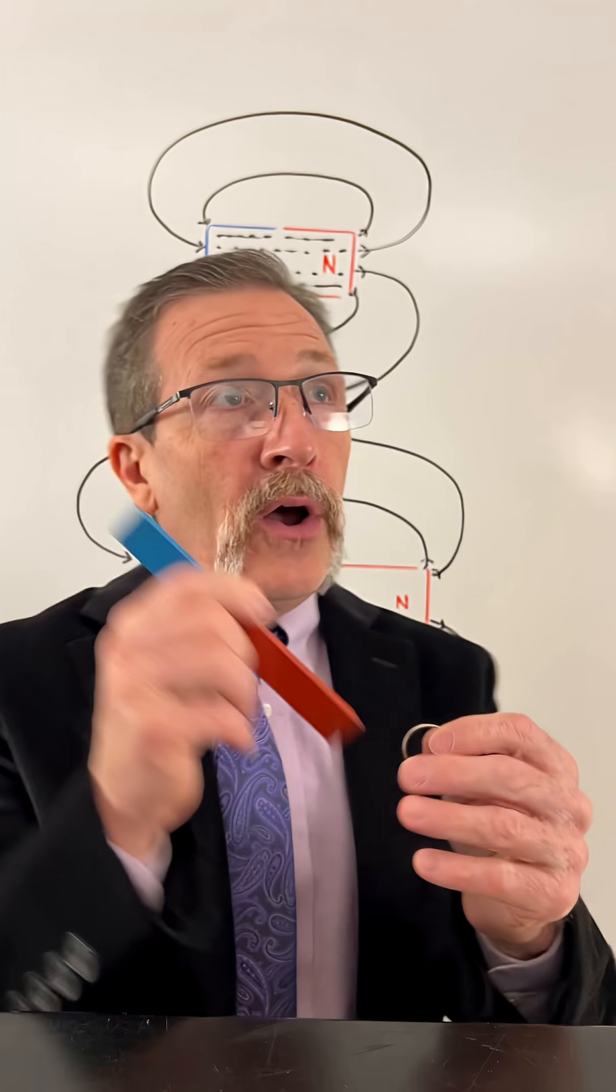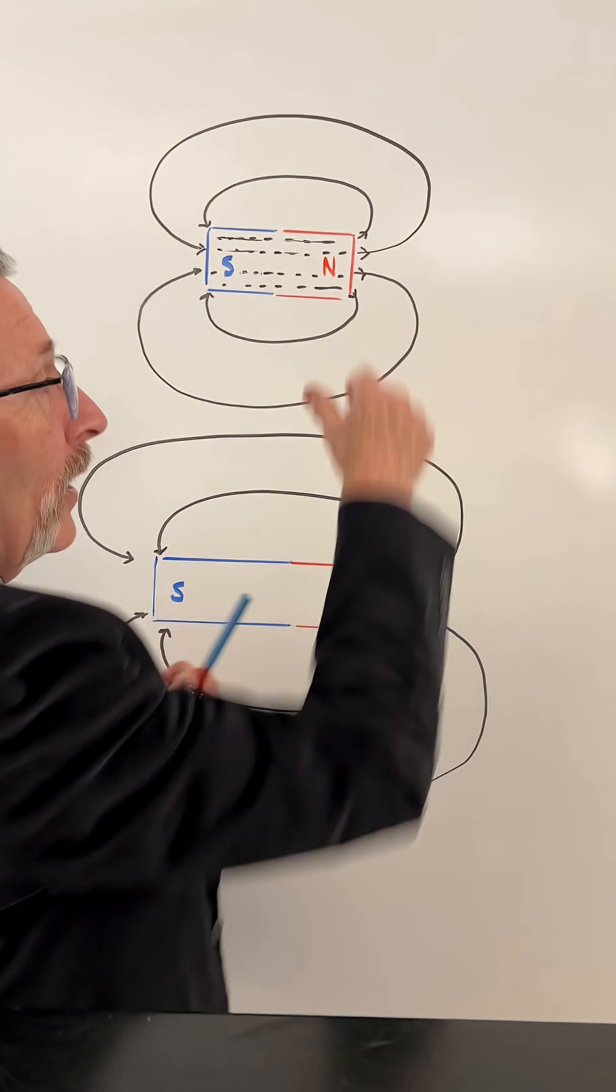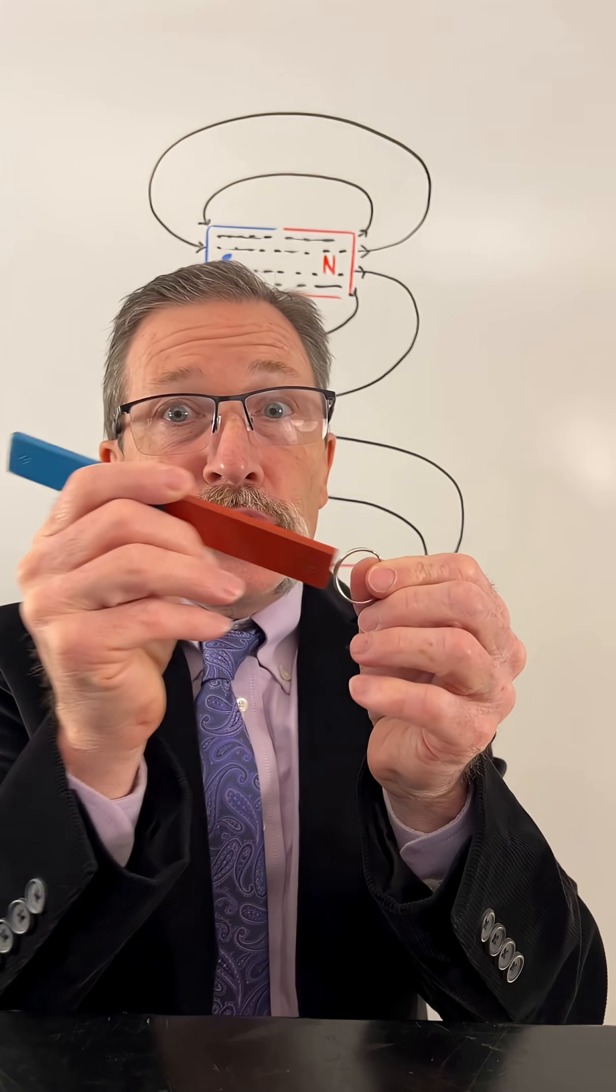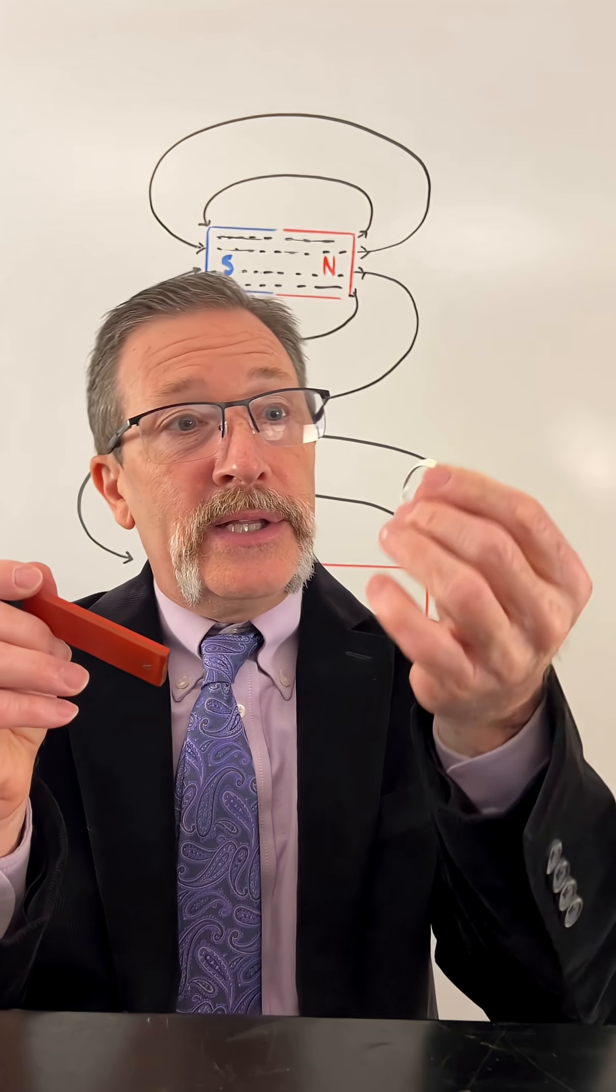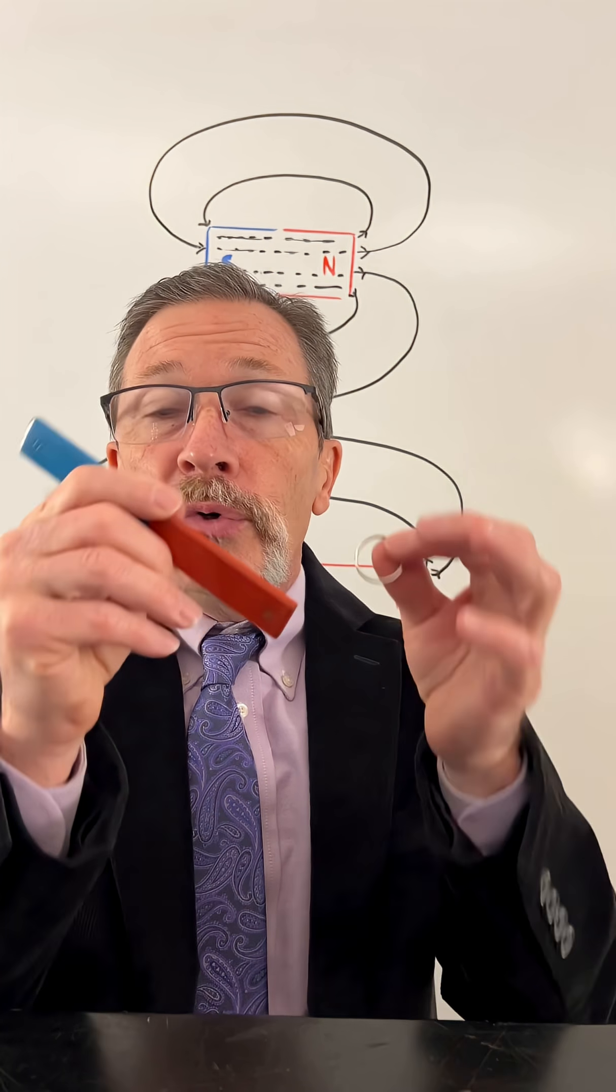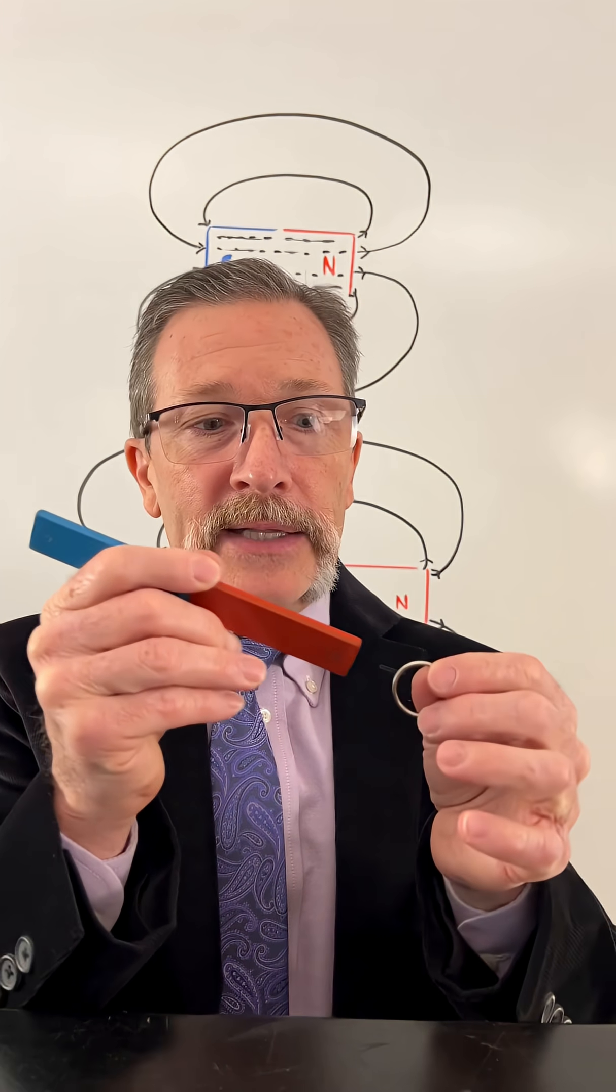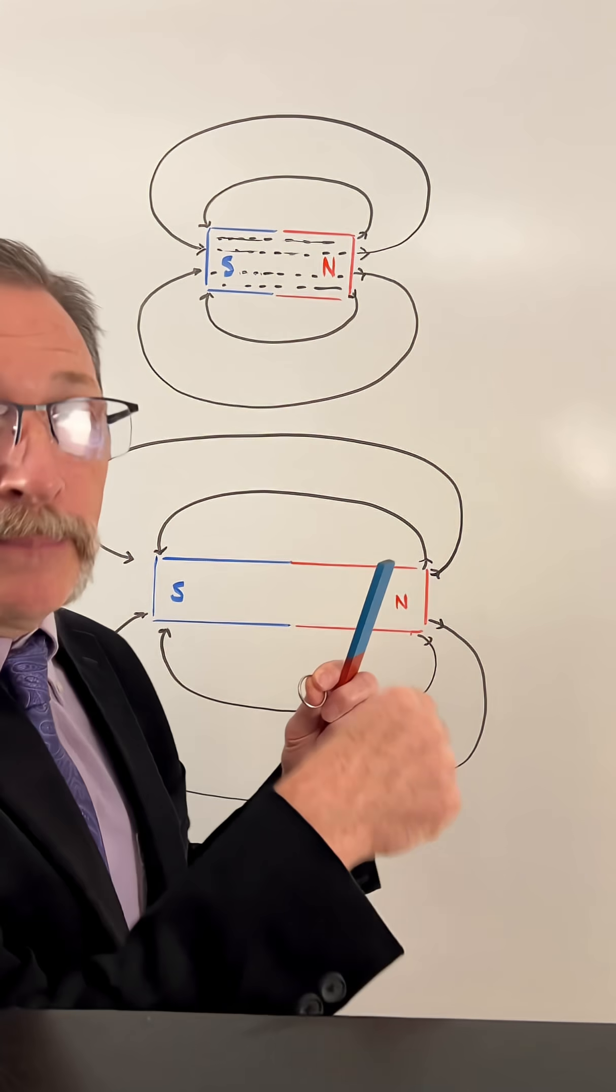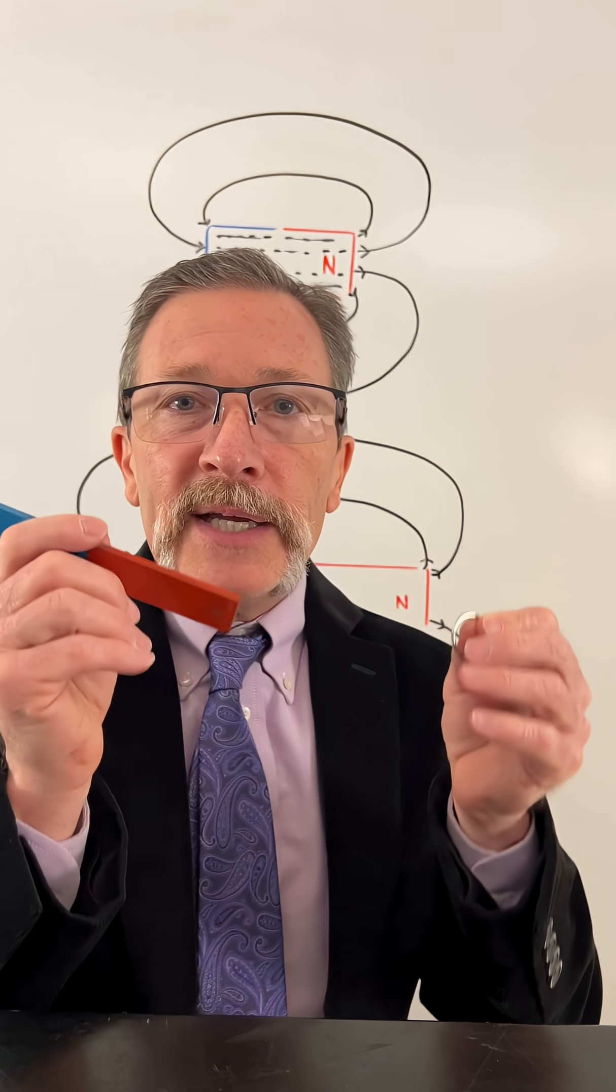On the one side we have our field lines coming out and they can induce all the atoms in this piece of steel to temporarily align themselves with that field line, making north-south. So they are going to be attracted.